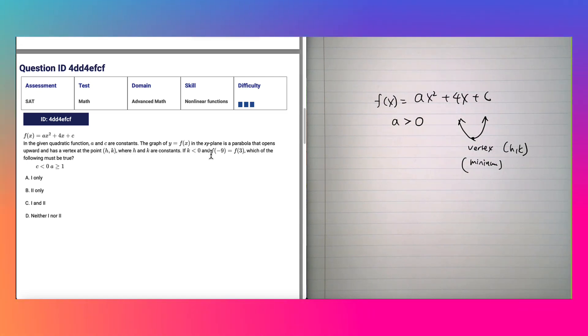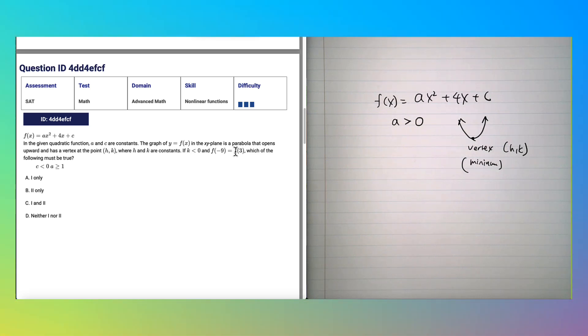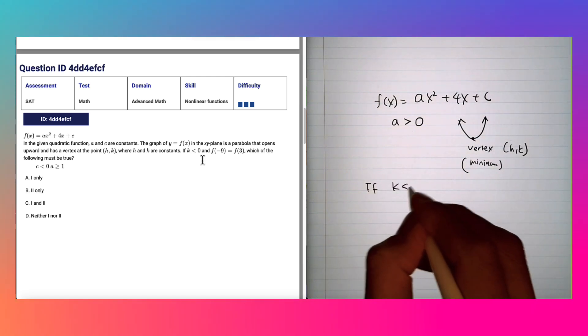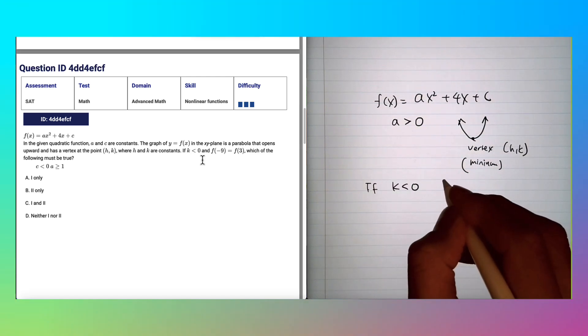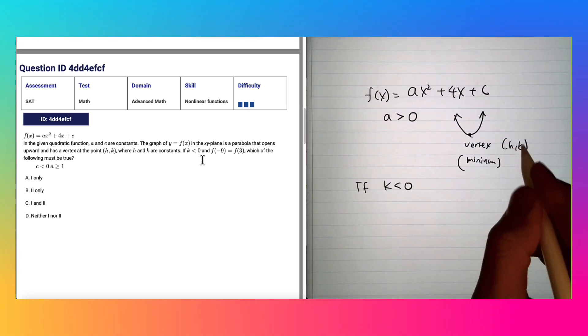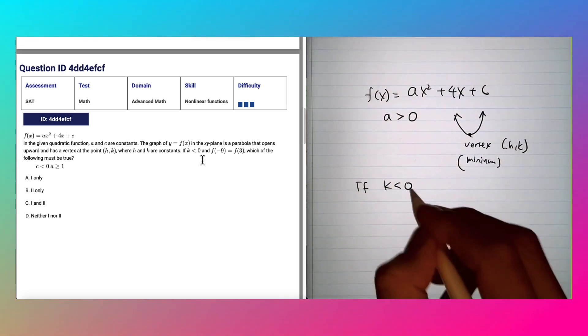So if k is less than zero, we have f(-9) = f(3). If k is less than zero, meaning the y-value of the vertex is less than zero.